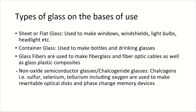Based on their use, glass types are classified as: sheet or flat glass, used to make windows, windshields, light bulbs, etc.; container glass, used to make bottles, drinking glasses, etc.; glass fibers, used to make fiberglass and fiber optic cables. Non-oxide semiconductor glasses are chalcogenide glasses, in which chalcogens are added — sulfur, selenium, tellurium — including oxygen. These are used to make optical discs, computer memory devices, etc.